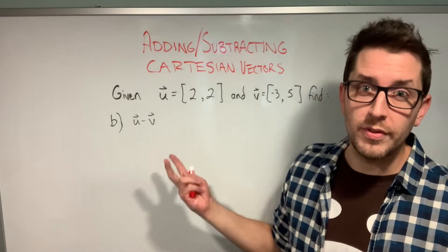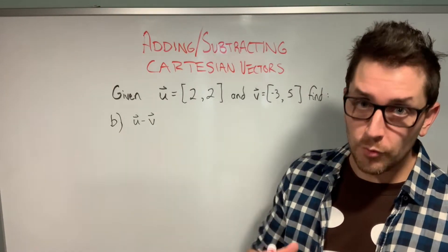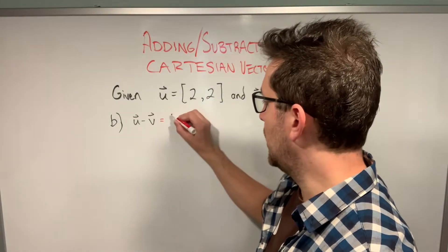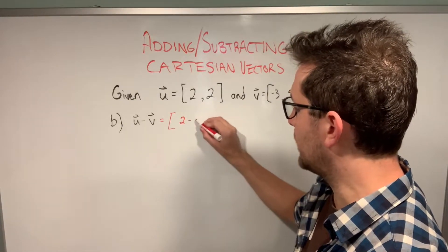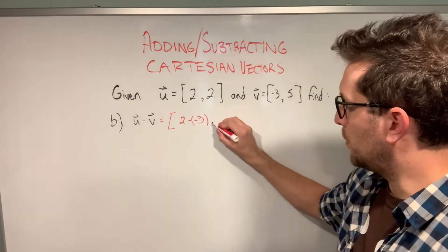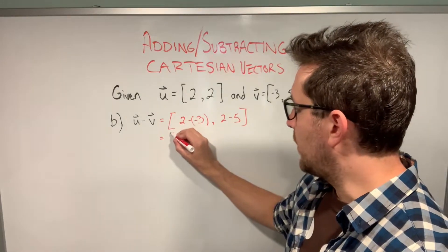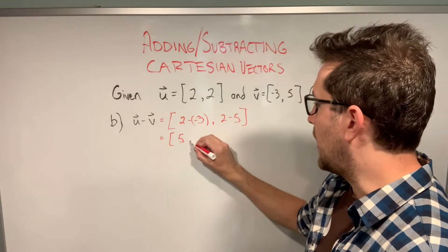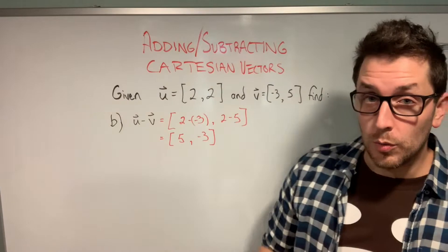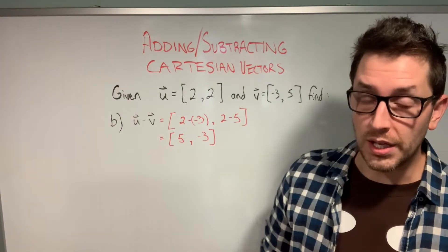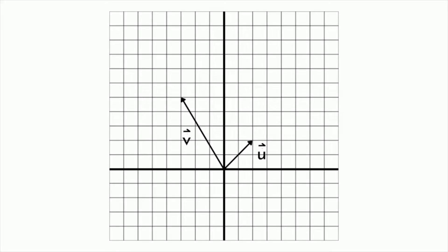Now let's stick with the same vectors U and V and find U minus V. We take 2 minus (-3), which is 5, and 2 minus 5, which is negative 3. So U minus V equals (5, -3). On the graph, with subtraction we take the second vector, flip its direction, then add tip to tail. You can see we end up with that (5, -3) vector as our resultant.